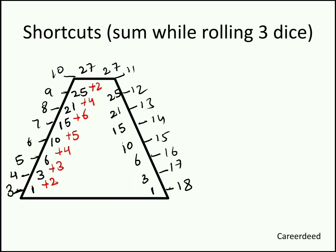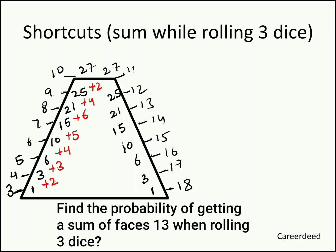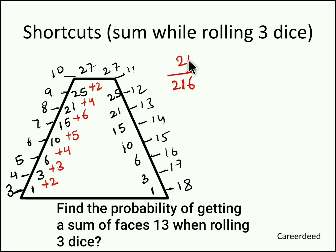Based on the concept discussed, let's solve a problem. Find the probability of getting a sum of faces equal to 13 while rolling 3 dice. While rolling 3 dice, the total sample space is 6³ = 216. The total number of events giving sum 13 is 21. So the probability is 21/216.